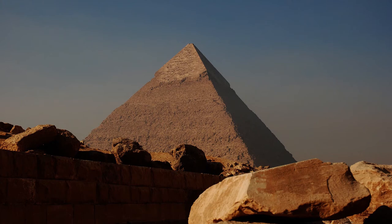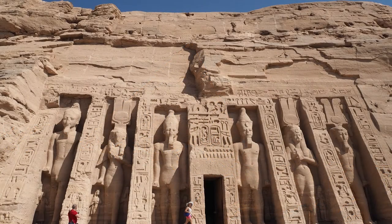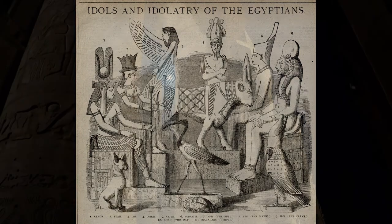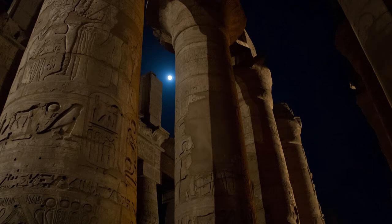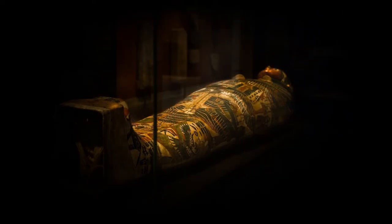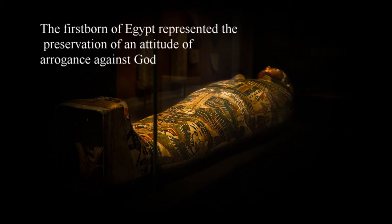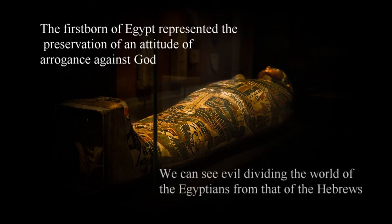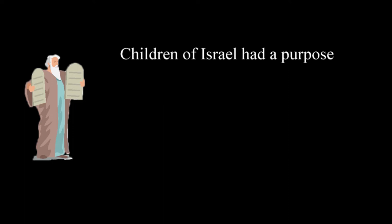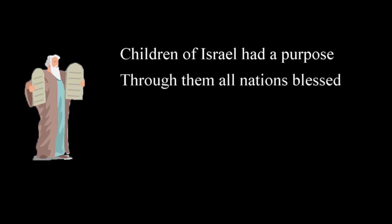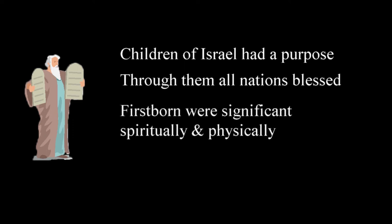God, however, wasn't a human rival and demonstrated that his power and wisdom would prevail. Egypt was an ancient power even during the days of Moses, enjoying unparalleled prosperity based on the ability to predict the rise and fall of the Nile River. The affluence and stability of the Egyptian kingdom perpetuated a belief that their gods were responsible for their blessings, and so they rejected Moses and the message from God. The nine plagues preceding the death of the firstborn devastated the land but hadn't touched the heart of the people, including Pharaoh, to the point that they were willing to release the Hebrews. The firstborn of Egypt not only represented their cultural heritage, but also the preservation of an attitude of arrogance and superiority. From this perspective, we can see evil dividing the world of the Egyptians from that of the Hebrews.